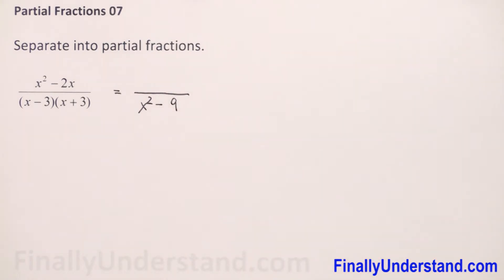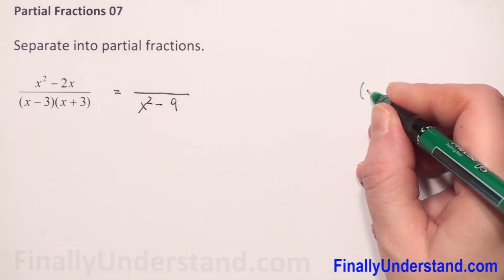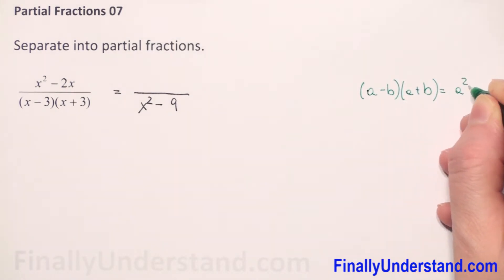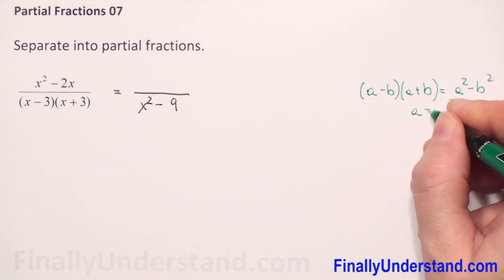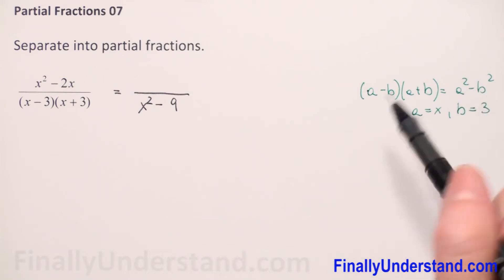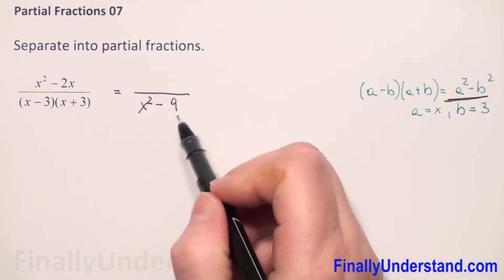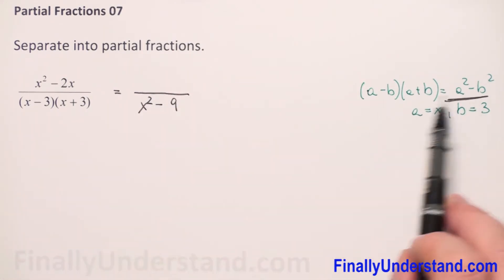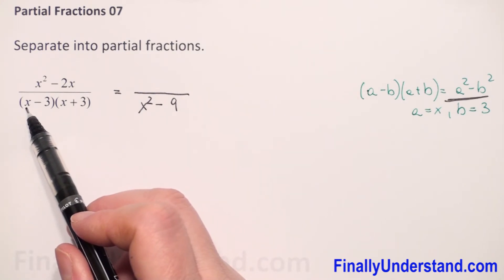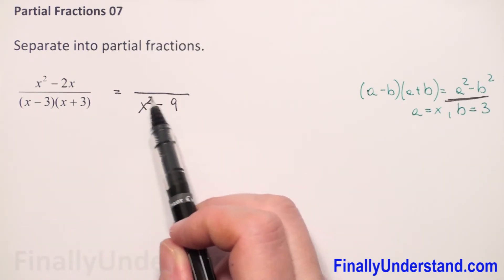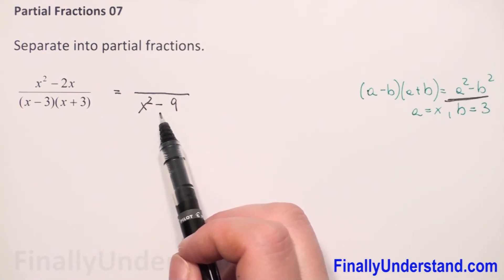If you don't remember the formula, let me remind you: when we have a minus b times a plus b, this is equal a squared minus b squared. In our example, a is equal x, b is equal 3. So I just use this formula to find our denominator. If you don't want to use this formula, you have to multiply every term in the first parenthesis by every term in the second parenthesis and combine like terms and you will get the same result.